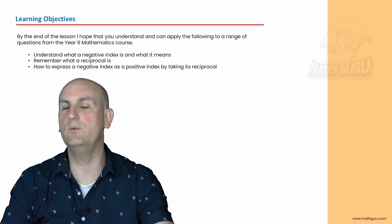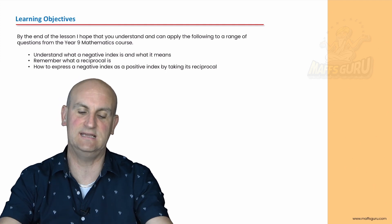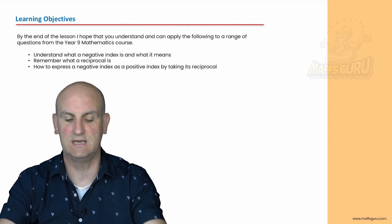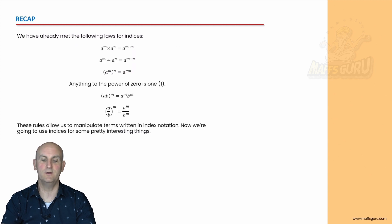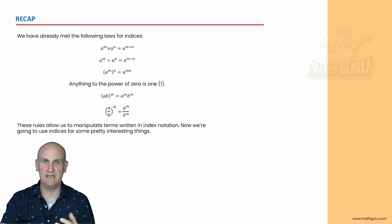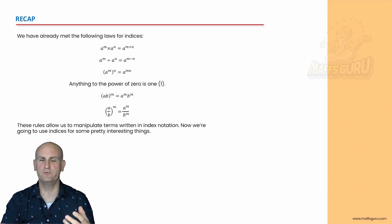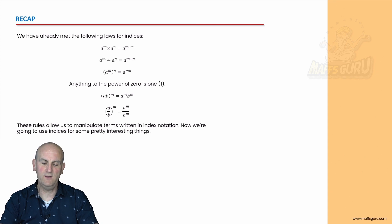What are we dealing with today? We're building on the topic we've done previously. We're going to understand what a negative index is and actually what it means. We're going to remember what a reciprocal is and how to express a negative index as a positive index by taking its reciprocal. On the screen at the moment I like doing a bit of a recap — we've dealt with five rules, but there are always more, and one of them is about manipulating negative indices.